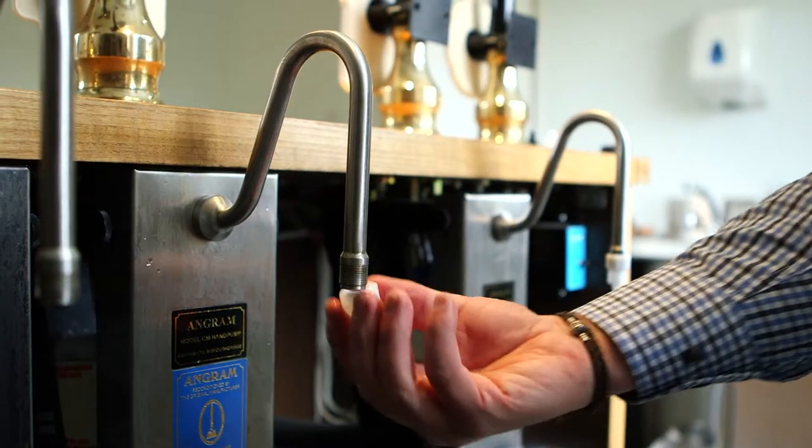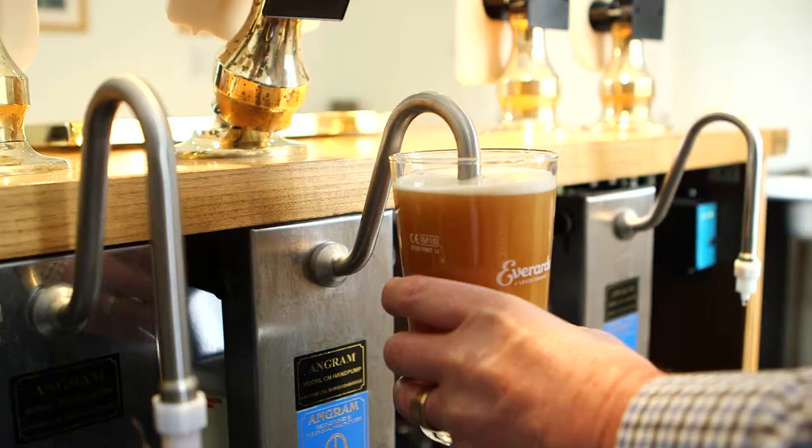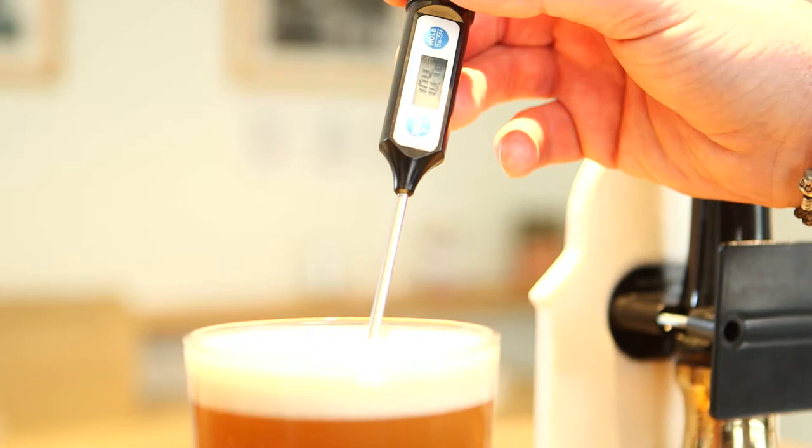Rinse sparklers under the tap and attach the hand pulls. Finally, inspect beer for clarity, aroma, taste and temperature.